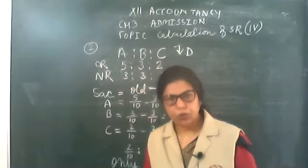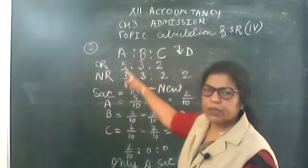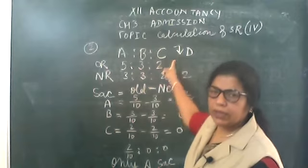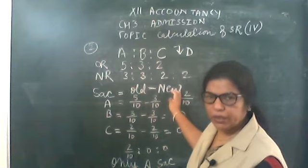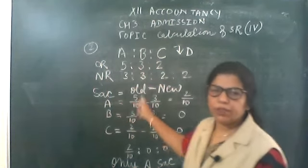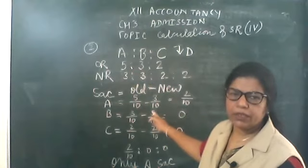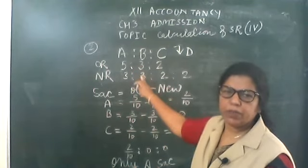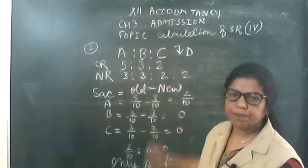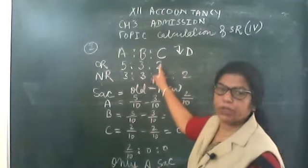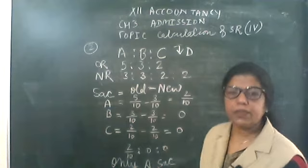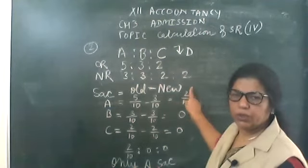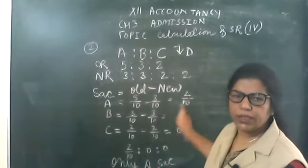Note down: A, B, C are partners for 5:3:2, D is the incoming partner, and the new ratio will be 3:3:2:2. Sacrifice equals old minus new. Old ratio of A is 5/10, new is 3/10. B's old ratio is 3/10, new is also 3/10. C's old ratio is 2/10, new also 2/10, so that is 0. Sacrifice ratios are 2/10, 0, 0 — meaning only A sacrifices.